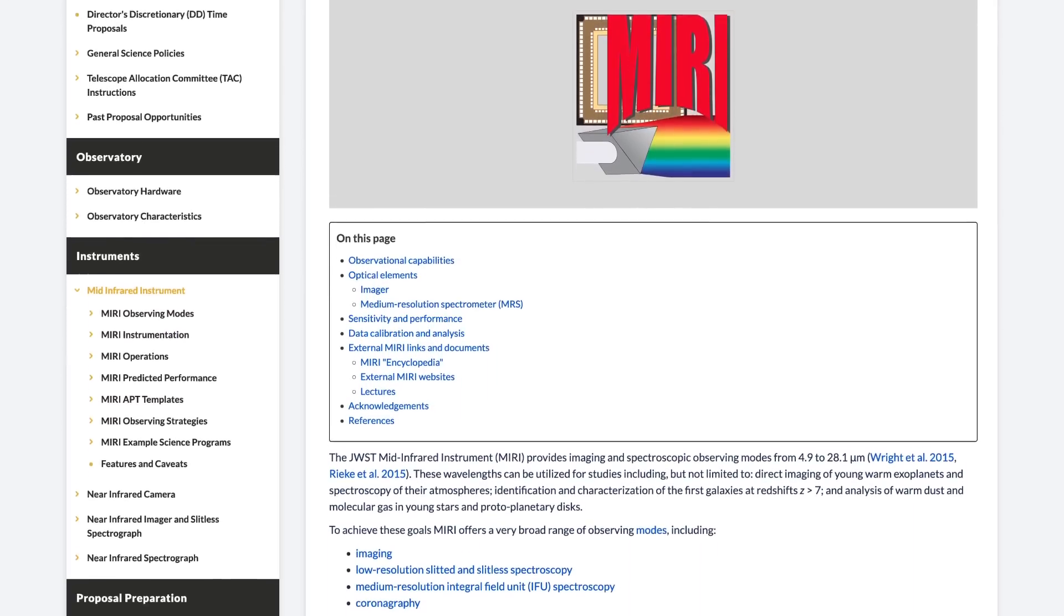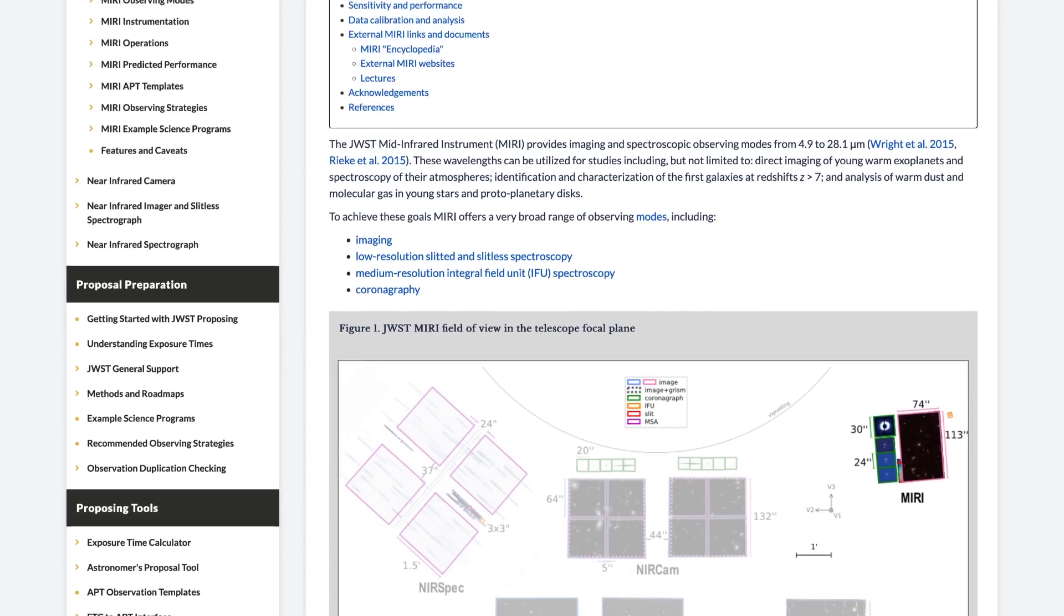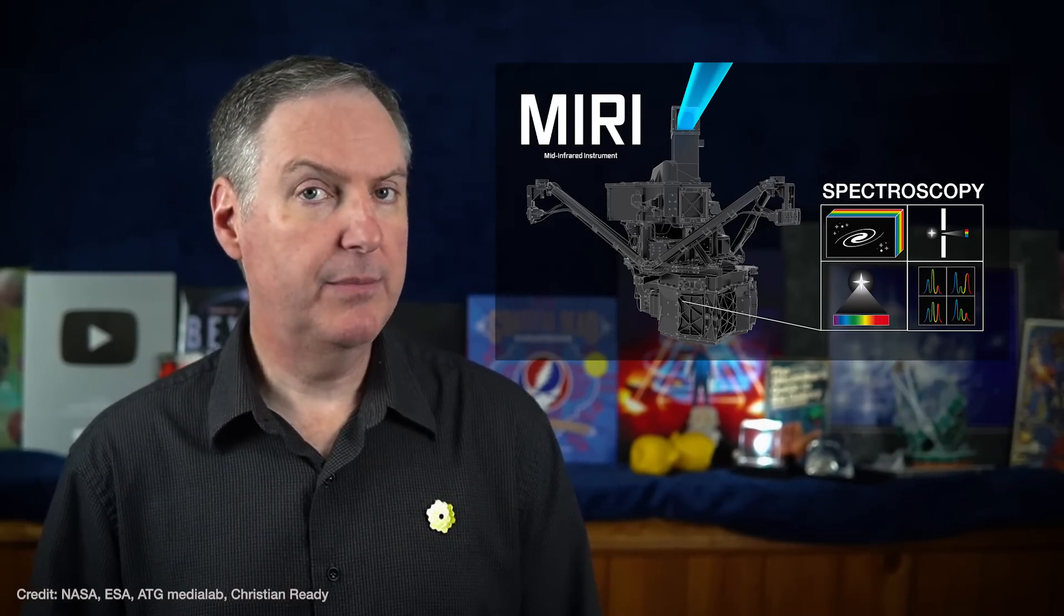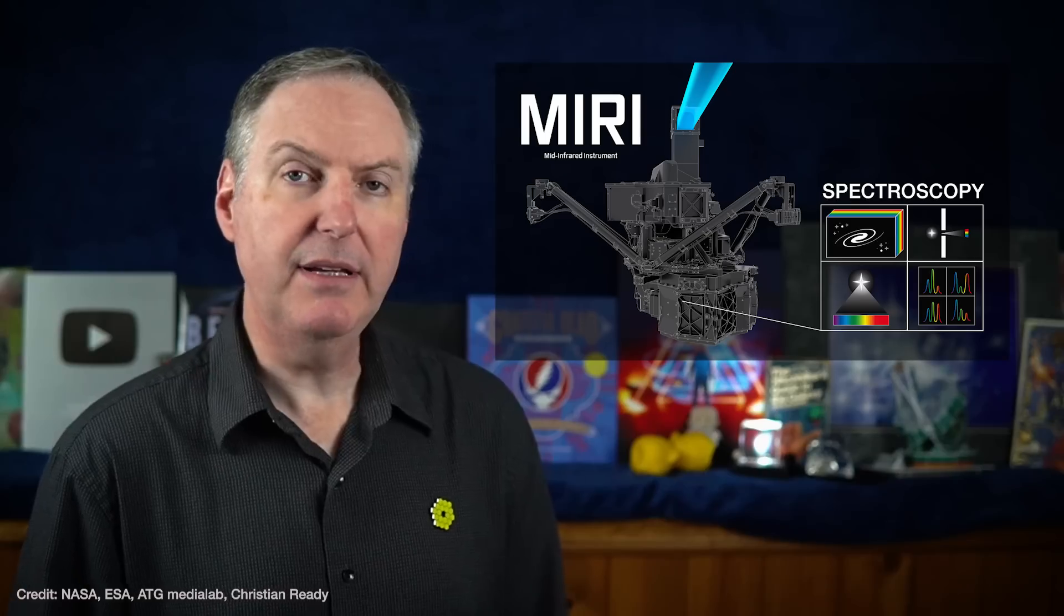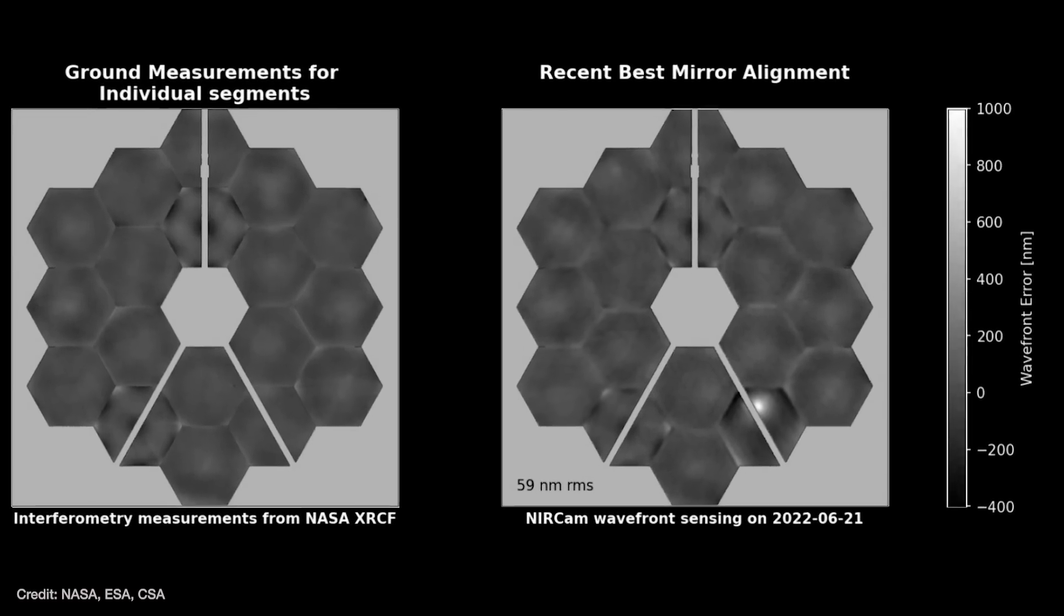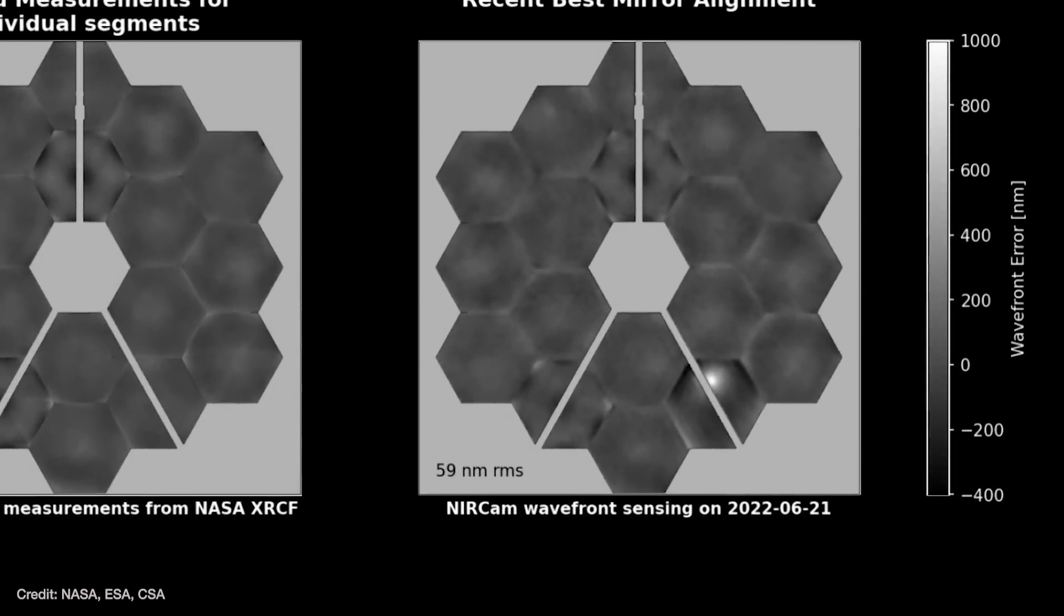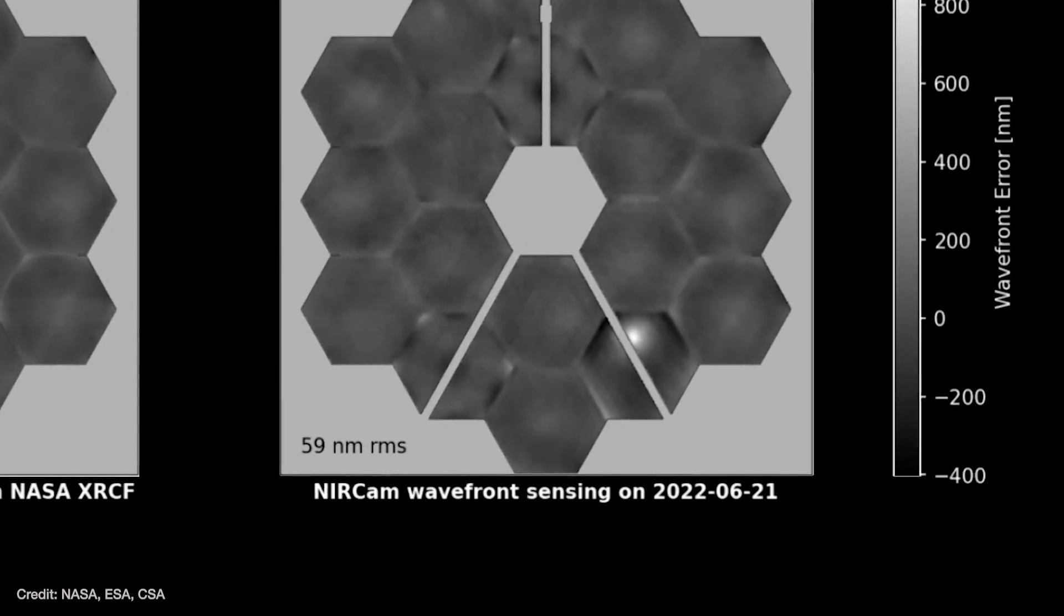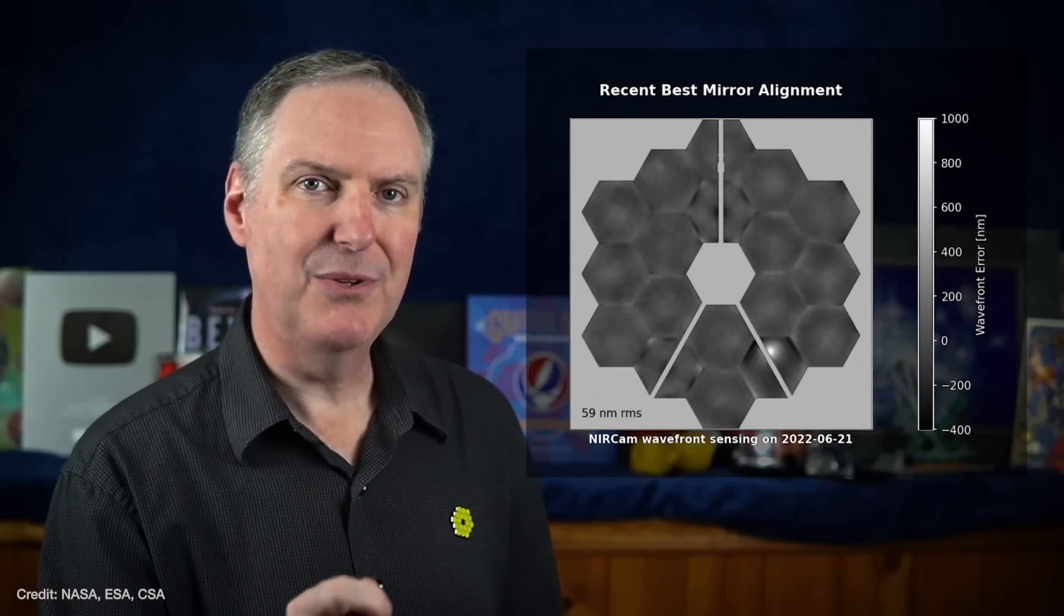MIRI's user documentation doesn't indicate any changes in how MRS observations are implemented. Still, the statement just seems a little vague, and I can't seem to find anything that indicates how the problem was actually resolved. I don't know why somebody from Team MIRI hasn't called me up by now to tell me. I mean, after all, I have the pin. Meanwhile, a working group investigating that large micrometeoroid strike in May announced a plan for how to further reduce the risk of future impacts. I'll tell you more about the details in a moment, but first I'd like to thank Squarespace for sponsoring today's video.